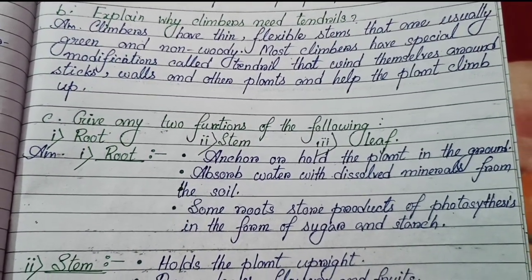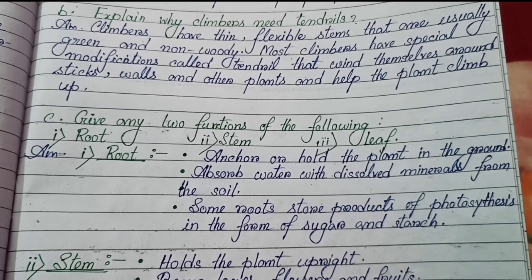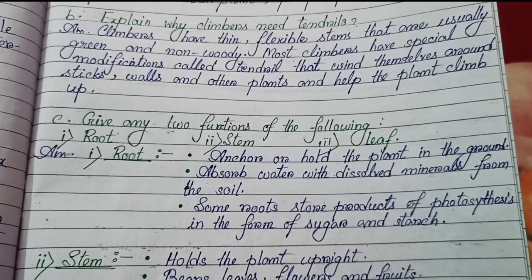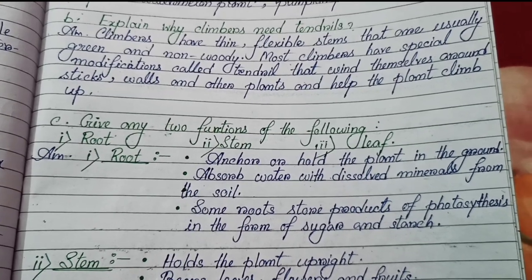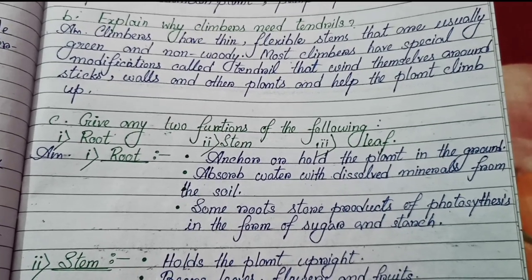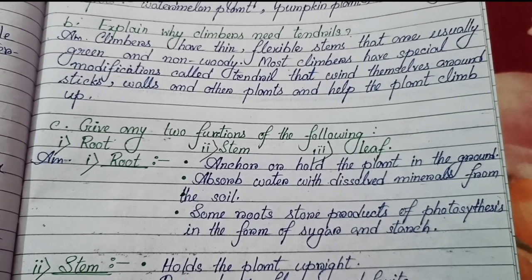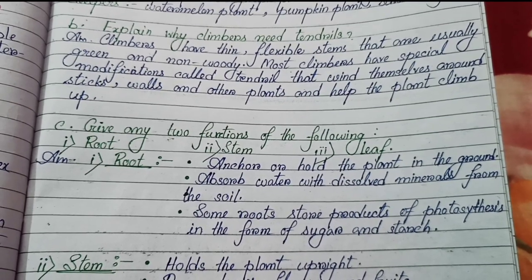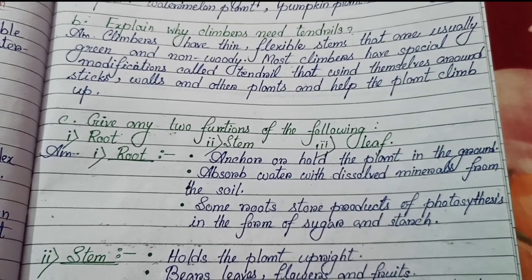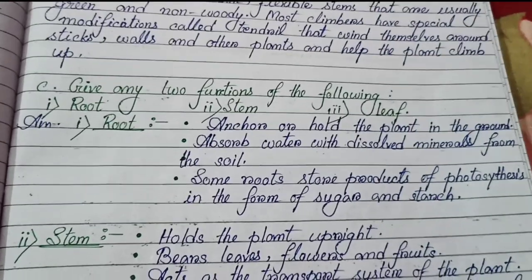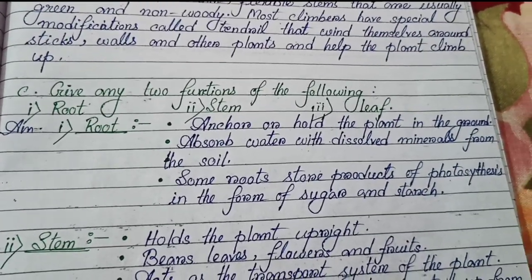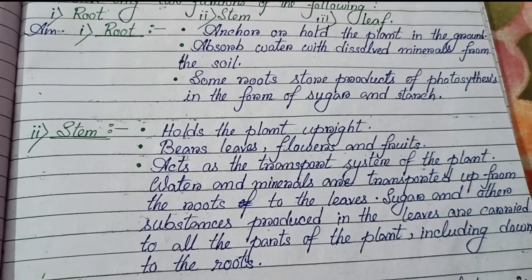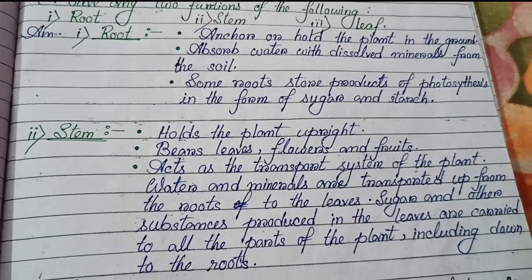Number (c): Give any two functions of root, stem and leaf. Root functions: first, anchor or hold the plant in the ground; second, absorb water with dissolved minerals from the soil; third, some roots store products of photosynthesis in the form of sugar and starch.